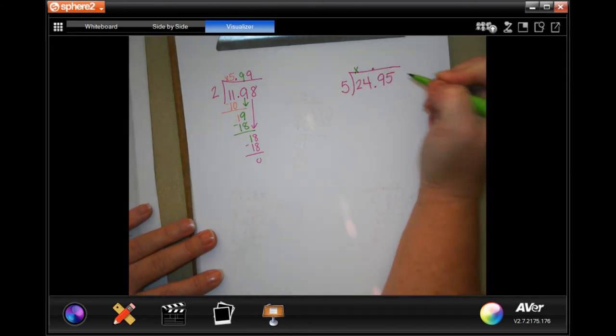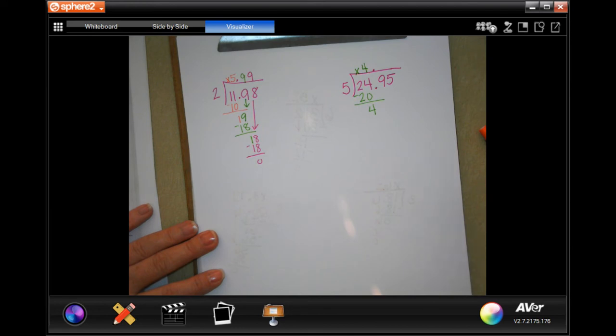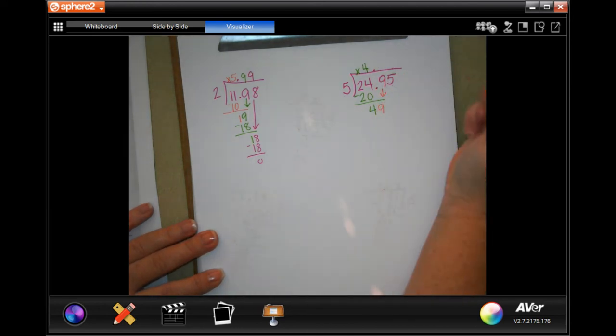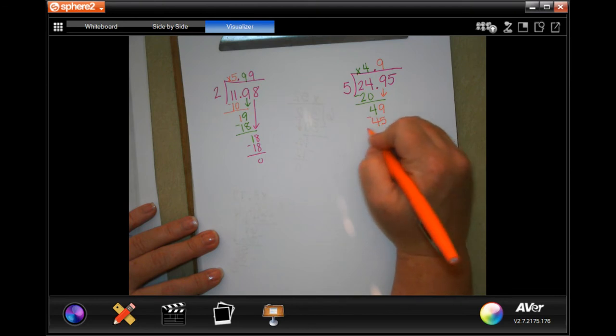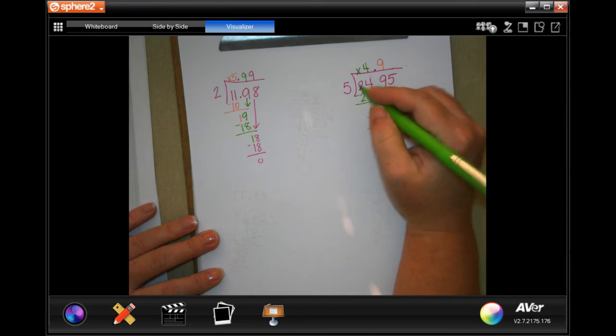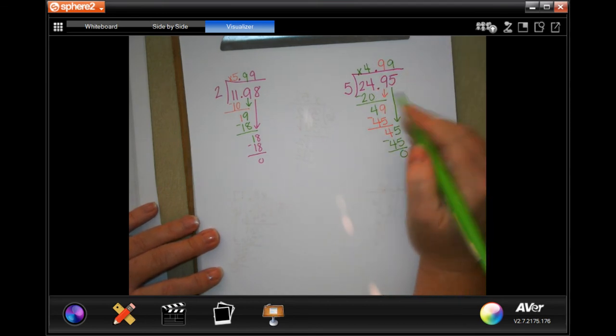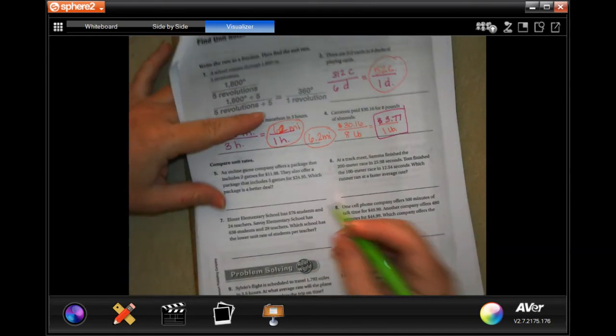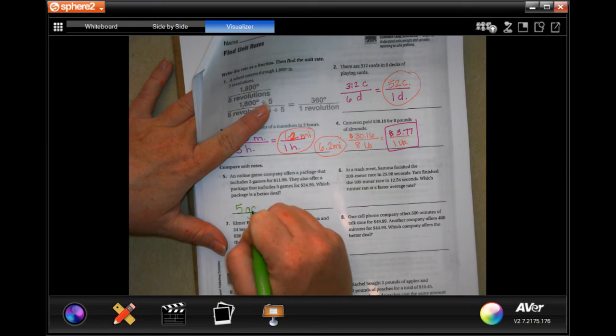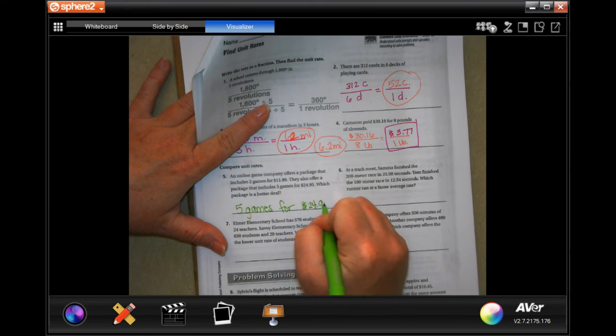5 is not going to go into 2, placeholders. 5 will go into 24, 4 times, which is 20. Subtract, get 4. 4 is definitely smaller than 5, so we are going to bring down our 9. 5 is going to go into 49, 9 times, which is 45. Subtract and get 4. 4 is smaller than 5, so I can bring down my 5. And we just said that 5 times 9 is 45. And that's exactly what I need. So the first deal is $5.99 per game and the second one is $4.99 per game. So 5 games for $24.95.